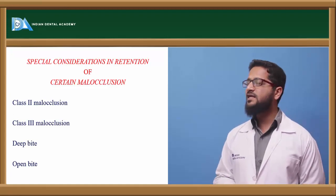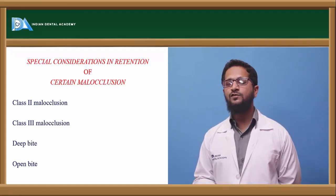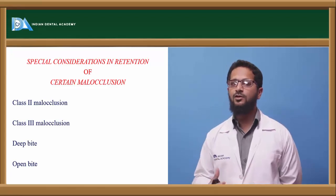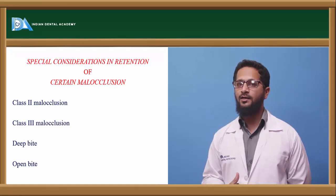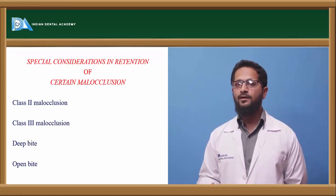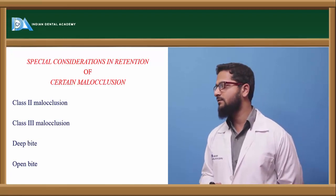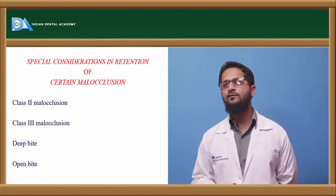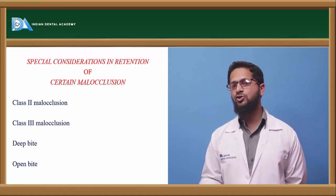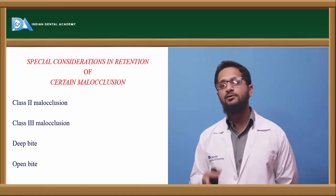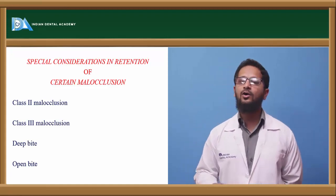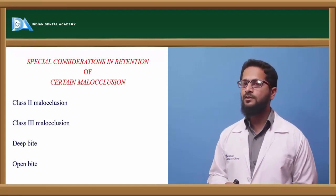Class 3 malocclusions usually occur due to abnormal excessive growth of the mandible. To prevent relapse, it is advised to use a chin cap along with an intraoral retainer. Other appliances like the FR3 appliance and reverse activator also help prevent relapse of Class 3 malocclusion. These functional appliances are indicated when correction is done at a very early age and abnormal growth is still expected. Since Class 3 malocclusions are treated as soon as they are noticed, they usually require prolonged or long-term retention.